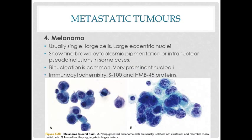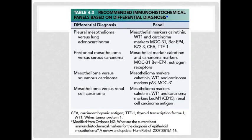Another metastatic tumor is melanoma. They are usually single large cells and have large eccentric nuclei. The cells have binucleus and prominent nucleoli. In some cases, they have fine brown pigments in the cytoplasm or intranuclear pseudo-inclusions. Cytologists may perform immunocytochemistry staining for precise cell detection, using S100 and HMB45 antibodies as detection markers. Here in this table is a simplified list of immunohistochemistry or immunocytochemistry staining markers that cytologists can use to detect specific cells — either mesothelioma or metastatic tumors — in case differential diagnosis is needed.